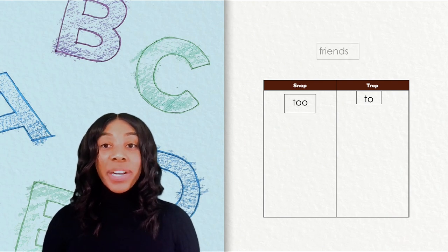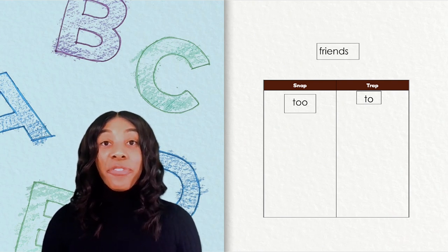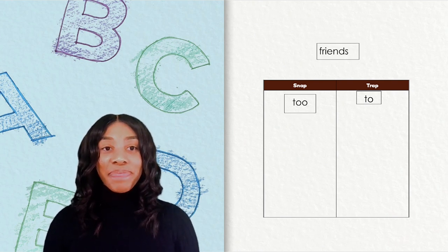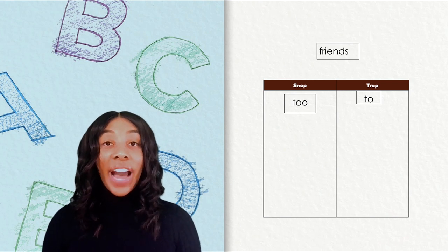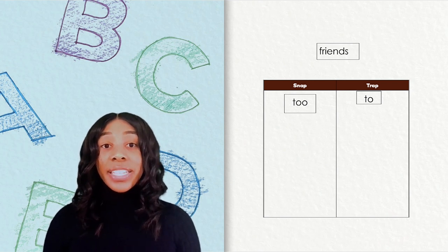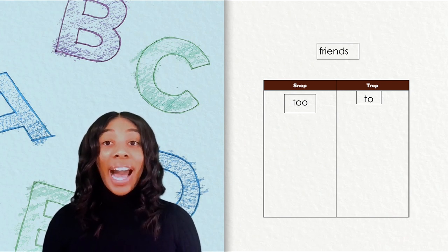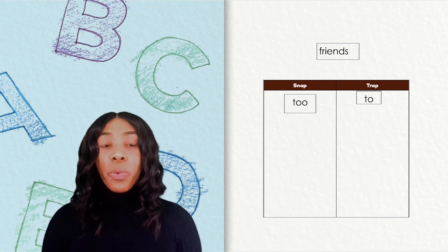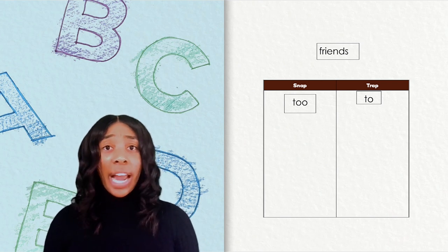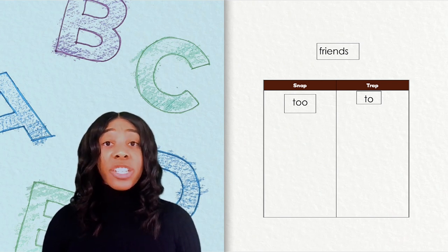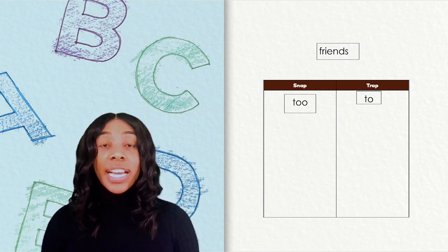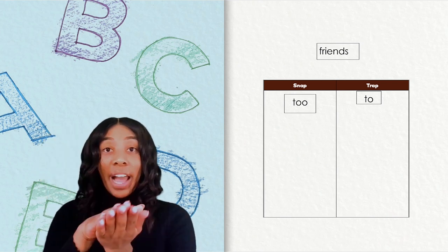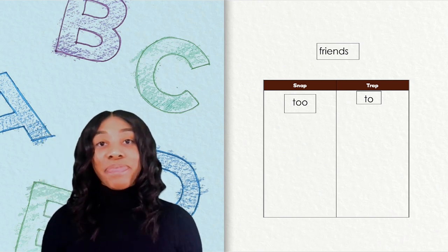Our next word is friends. I hear the vowel sound E in this word, but I see I-E, which is not what I would expect. This is a tricky word and it goes in the track column.